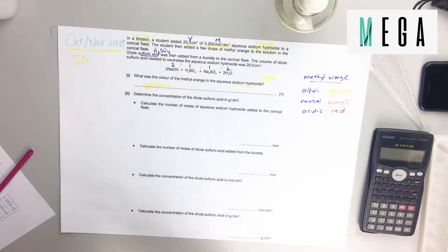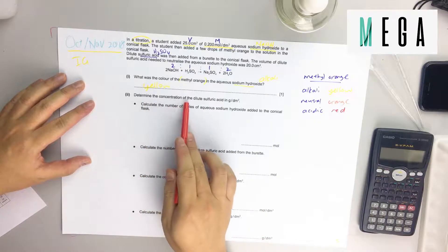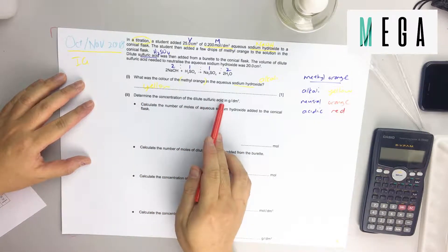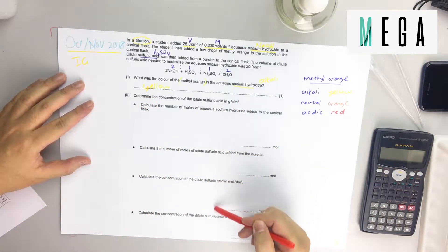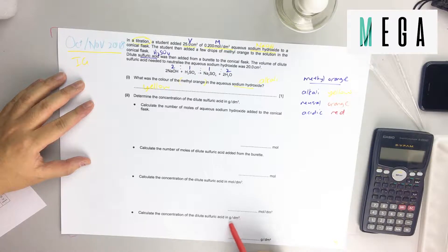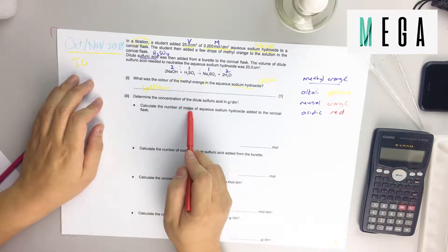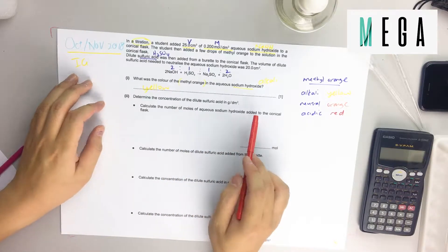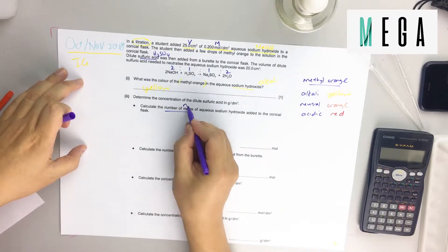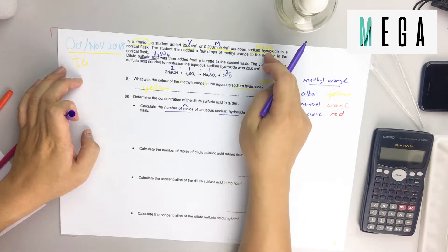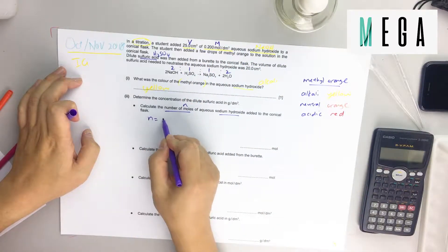Second question is the calculation stoichiometry. Determine the concentration of dilute sulfuric acid in grams per dm³. Start with this: calculate the number of moles of aqueous sodium hydroxide. Whenever you see number of moles, you need number n of sodium hydroxide. Referring to the given V and M, recall the formula: MV over 1000.